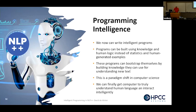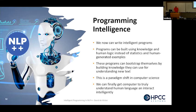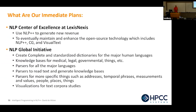So: programming intelligence. We can now write programs with — write intelligent programs. Programs can be built using knowledge and human logic instead of statistics and human-generated samples. These programs can bootstrap themselves by building knowledge they can use to understand new text. One of our goals is to build analyzers that just read through Wikipedia and build knowledge from it. This is a paradigm shift in computer science. And we can finally get to those computers that truly understand humans and interact intelligently with them.